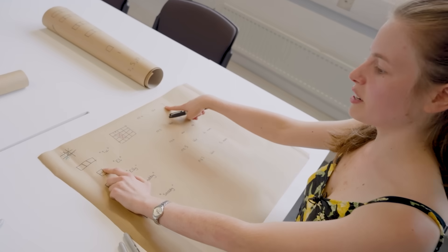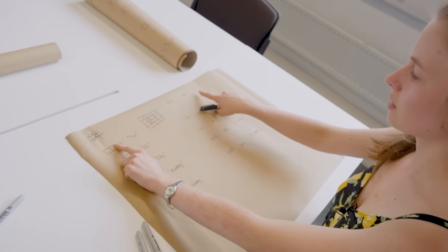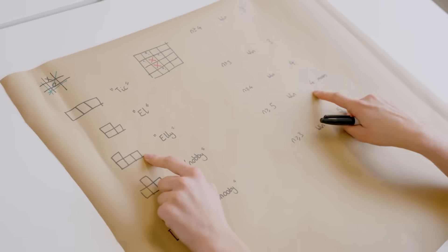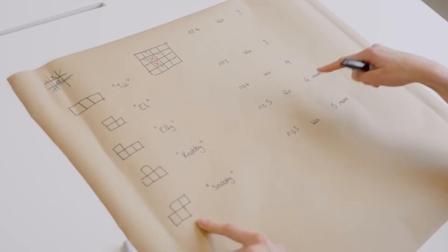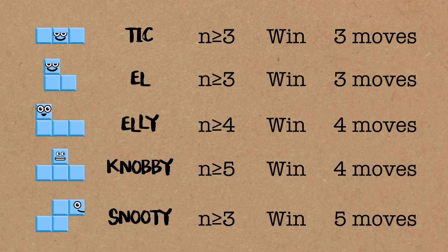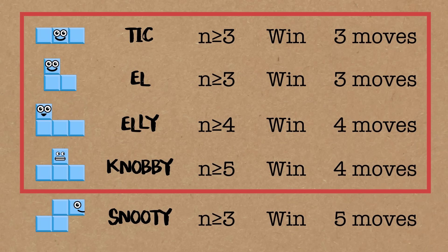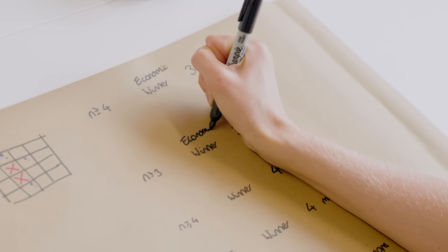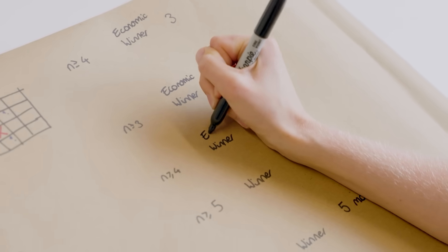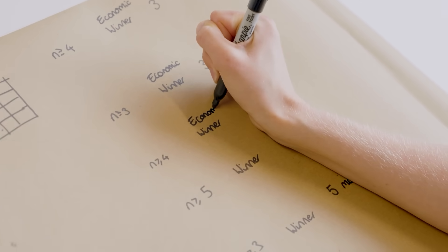But that's something interesting. So far, this has been three squares and taken three moves. Three squares, three moves. Four squares, four moves. Four squares, four moves. This is four squares. This is five moves. So we'll call these all winners, because you can guarantee to win. But clearly there's some hierarchy here, right? These guys, you can win in the minimum number of moves. So we're going to call them economic winners.